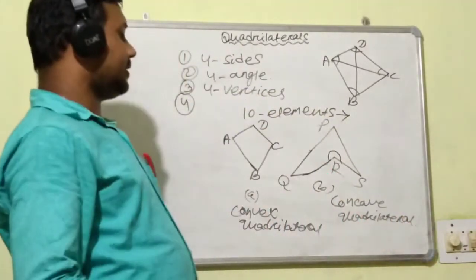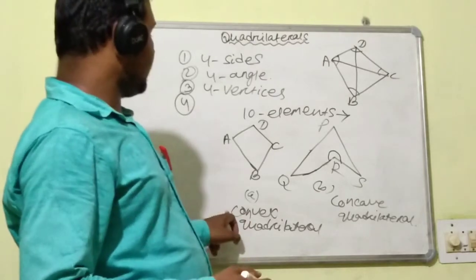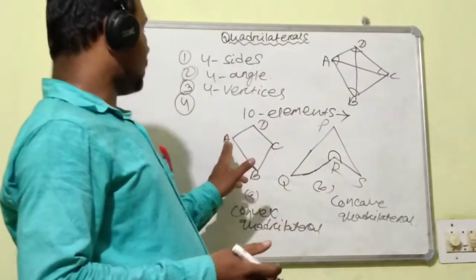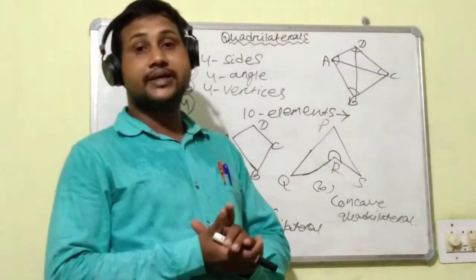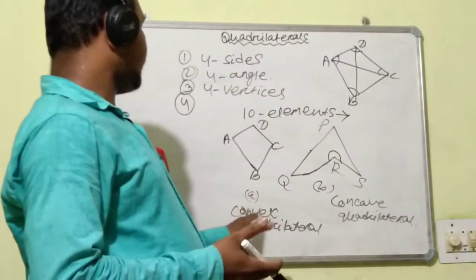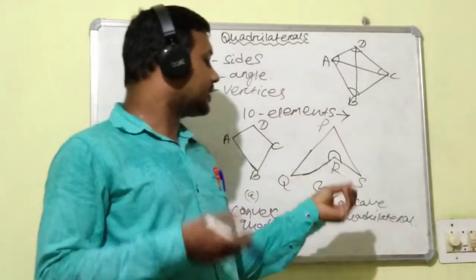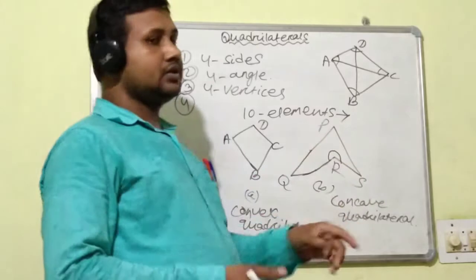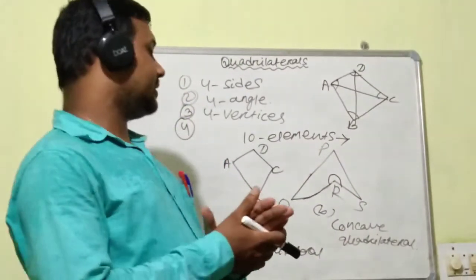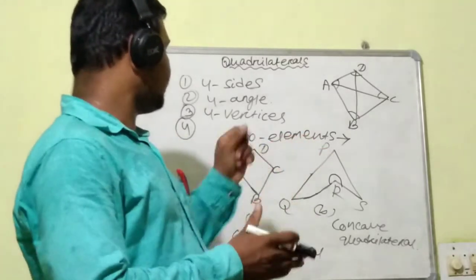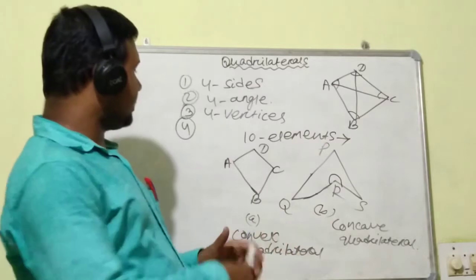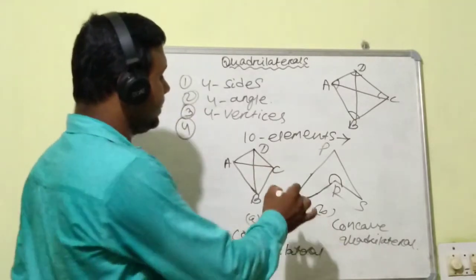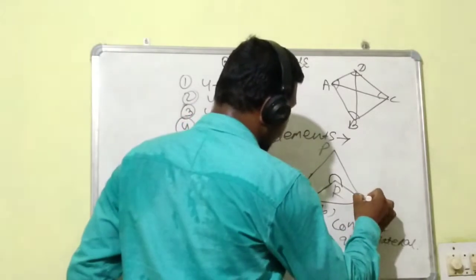What is the definition of a convex quadrilateral? The quadrilateral whose each angle is less than 180 degrees is called a convex quadrilateral. And what is a concave quadrilateral? The quadrilateral whose one angle is greater than 180 degrees. In a convex quadrilateral, the two diagonals are inside of it. But in a concave quadrilateral, one diagonal is outside of it.